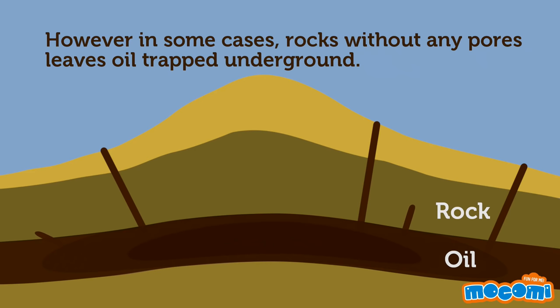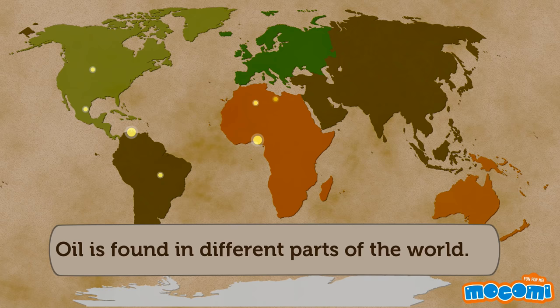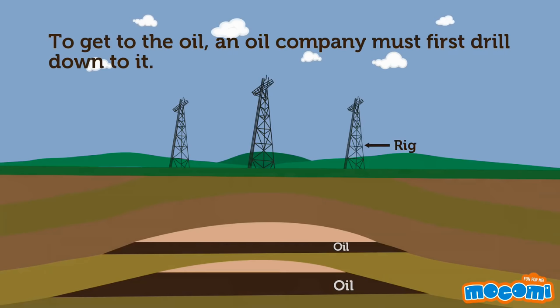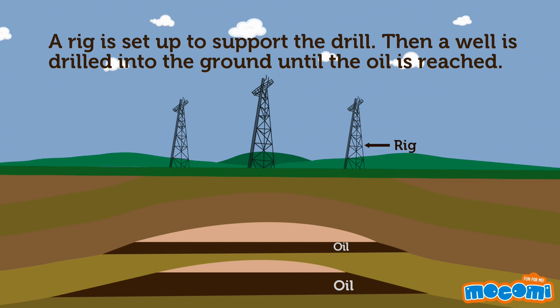Oil is found in different parts of the world. The places where oil is extracted are called oil fields. More than half of the world's oil is produced in the Middle East. To get to the oil, an oil company must first drill down to it. A rig is set up to support the drill, then a well is drilled into the ground.